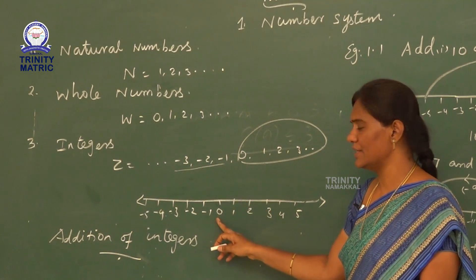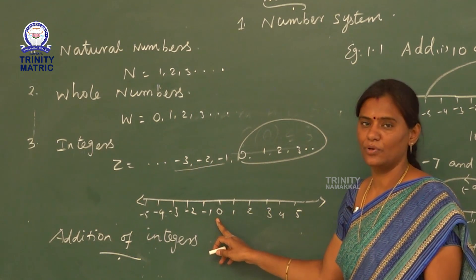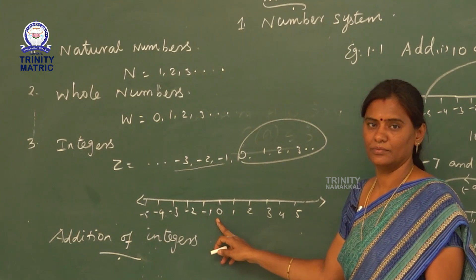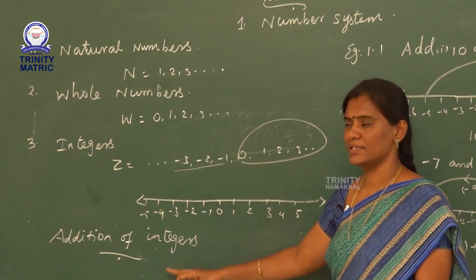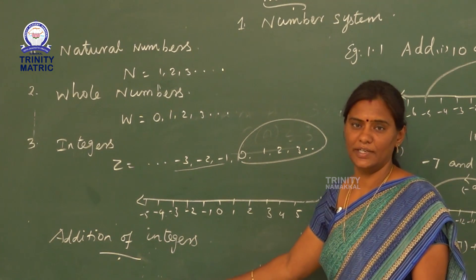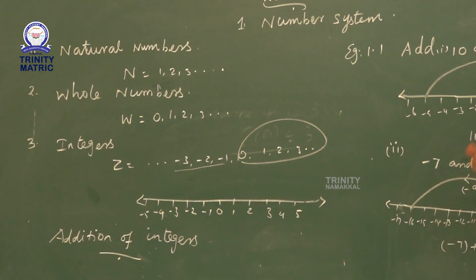The negative integers, 0, and positive integers all together are known as integers. This 0 is neither positive nor negative. Now we are going to see addition of integers — how to add integers using the number line.